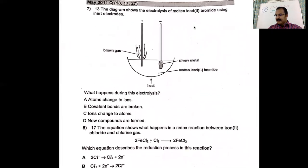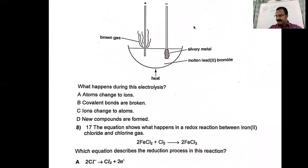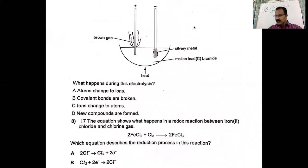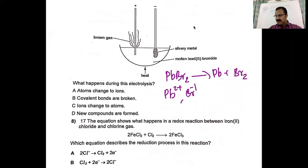The next diagram shows the electrolysis of molten lead bromide using inert electrodes. What happens during the electrolysis? PbBr₂ becomes Pb and Br₂ — Pb is Pb²⁺ and bromine is Br⁻. Option A says atoms change to ions — no, actually ions are changing to atoms. Option B says covalent bonds are broken — no, they only have ionic bonds. Option C says ions change to atoms — that's correct. Option D says new compounds are formed — actually new elements are formed. So the correct answer is C.